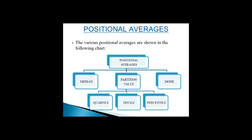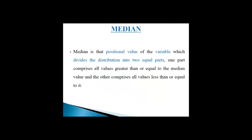The arithmetic mean is affected by the presence of extreme values in the data. If you take a measure of central tendency which is based on the middle position of the data, it is not affected by extreme items. Median is that positional value of the variable which divides the distribution into two equal parts — one part comprises all values greater than or equal to the median value and the other comprises all values less than or equal to it. The median is the middle element when the data set is arranged in order of magnitude.